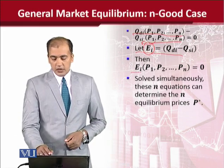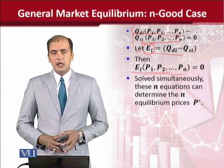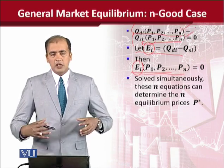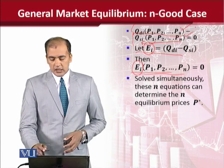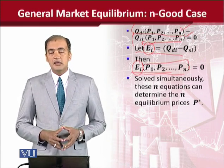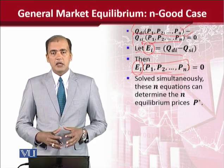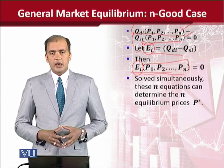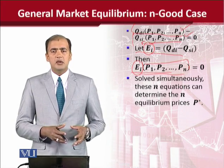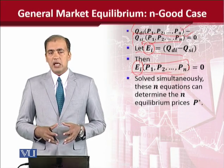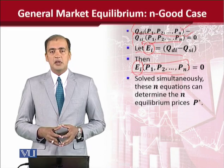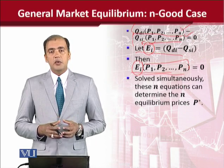So, using ei in place of QDi minus QSi, we can define the excess demand function. We have identified and represented the difference between QDi and QSi as equal to ei to determine the excess demand function. Now, if we simultaneously solve these — just as we simultaneously solve both demand and supply equations in the one-good or two-good case — when dealing with N equations it will be more complex and general in nature, not specific. But if we do that, we can achieve the result in the form of equilibrium values of price and output.